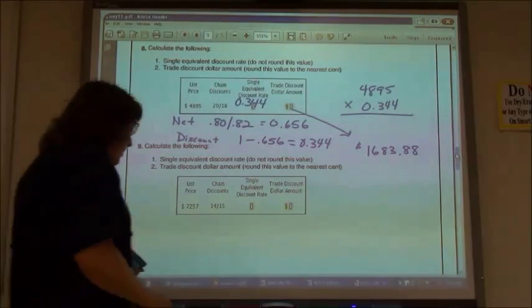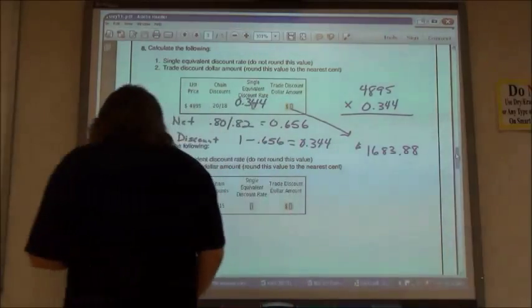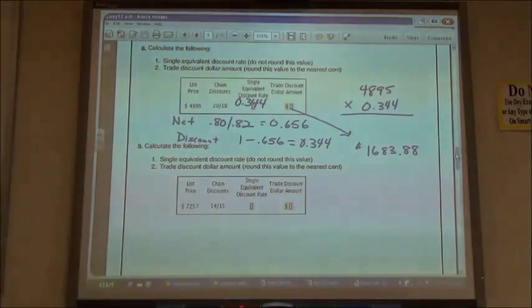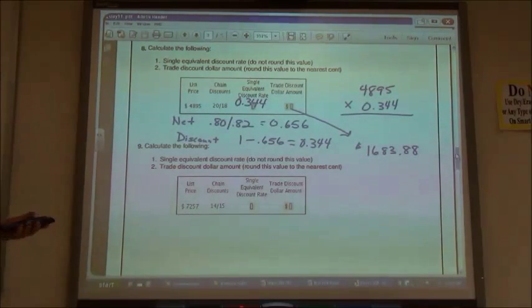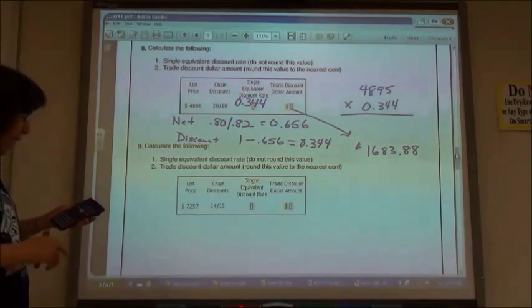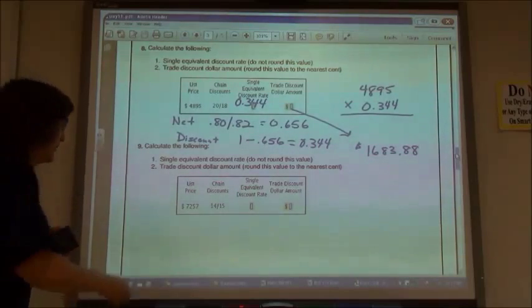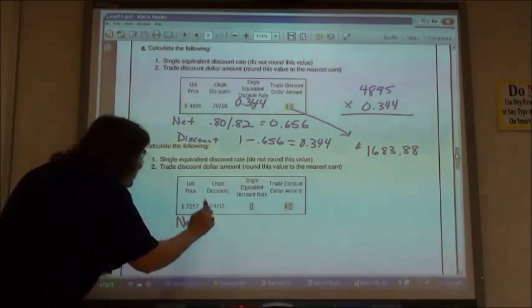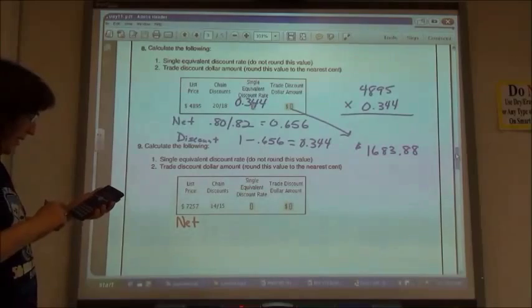And number 9, we'll see if I can fit that all on the screen here. Again, I've got my chain discount of 14% and 15%. I want to find the single equivalent discount rate, but first I have to find the net. So if I look for the net first, if I have a 14% discount, 100 minus 14 gives us 86%.